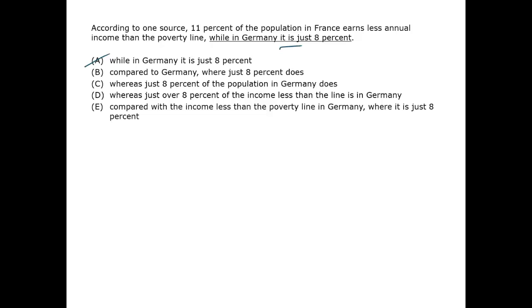Choice A is out. Choice B has a bad comparison — nothing preceding the comma, for example 11%, is logically comparable to Germany. So B is out.